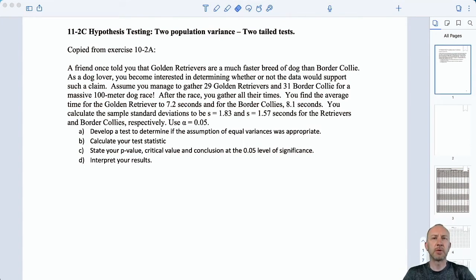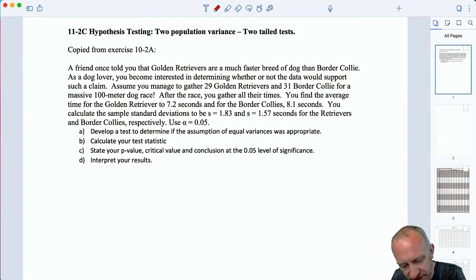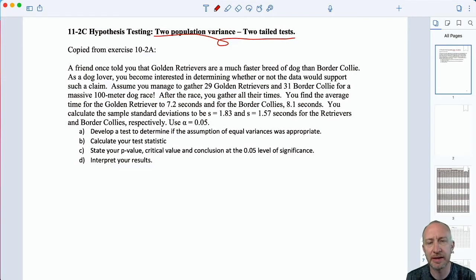Hello, hello. Here we are once again. Hypothesis testing on true population variances. This time, of course, now we change it up a little bit and we're doing two-tailed tests. How do we know it's a two-tailed test? Let's read the problem and find out.